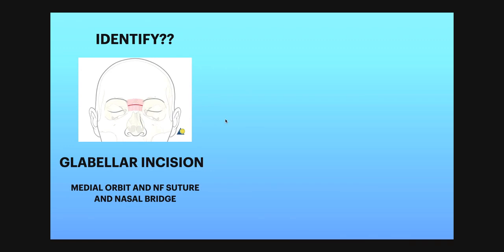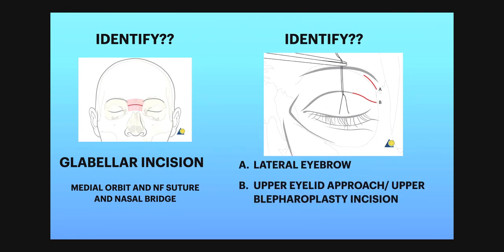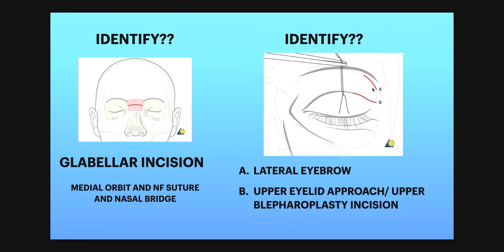This question can come as a diagram-based question. In this picture, A shows the lateral eyebrow approach — that is, lateral eyebrow incision for approaching the frontozygomatic suture. B shows the upper eyelid approach, also called the upper blepharoplasty incision, which can also be used to assess the frontozygomatic suture as well as the supraorbital rim.